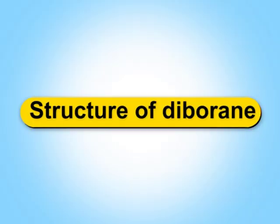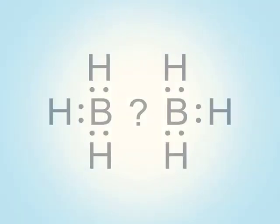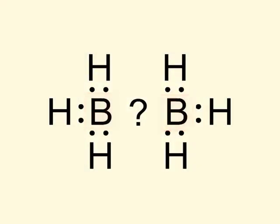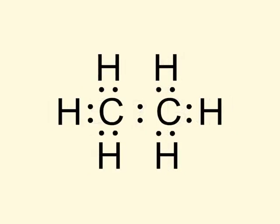Children, let us now discuss the structure of diborane. The structure of diborane, B2H6, is somewhat typical. Diborane cannot have a structure similar to ethane, i.e., C2H6, where the carbon atoms are tetravalent and not trivalent.